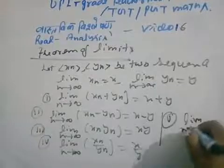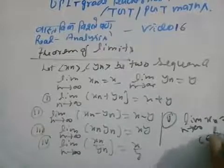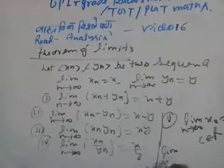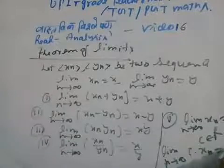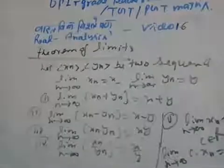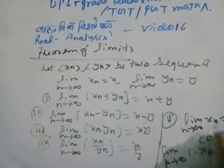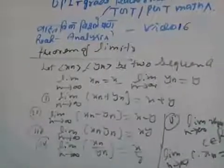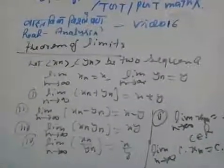If the limit as n tends to infinity of xn equals l, and a scalar c belongs to ℝ, then the limit as n tends to infinity of c·xn equals c·l. This is the same condition — theorem of limits. There are 5 points in the limit theorem, so pay attention to all of them.